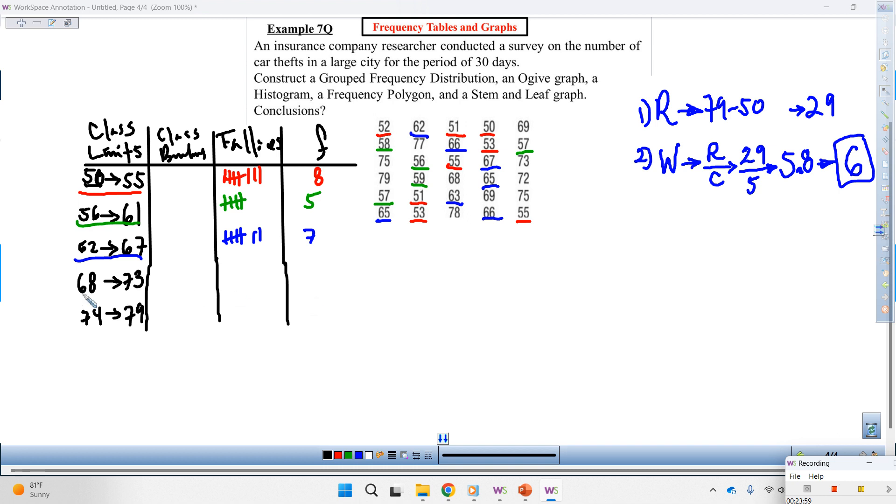All right. Check with the neighbors. See what they got for the next class and their tallies and their frequency. All right. Let's see. Alexa, what'd you get? Tallies and frequency. Six. Hands, have you got six? Looks about right.